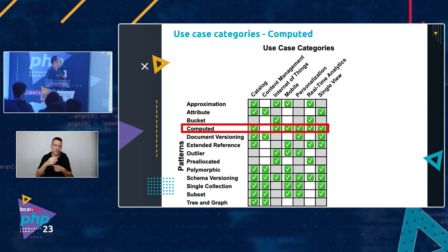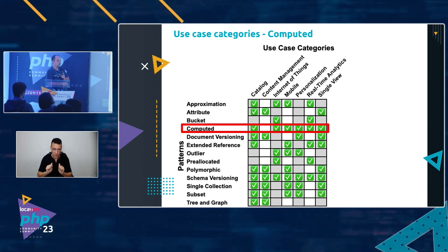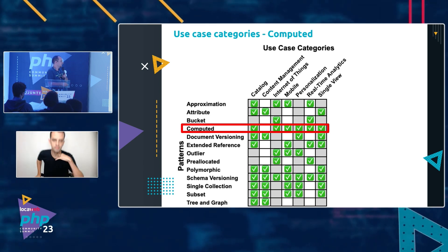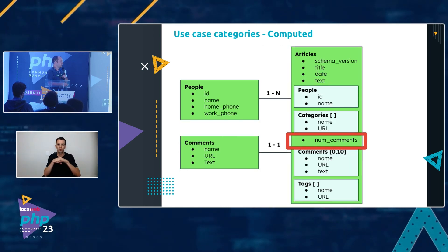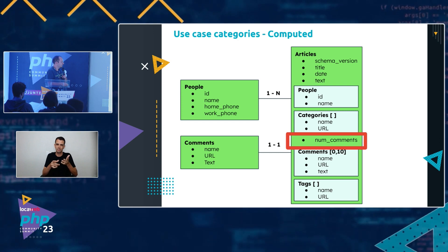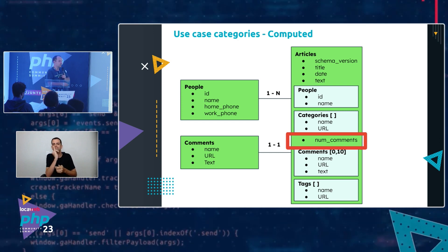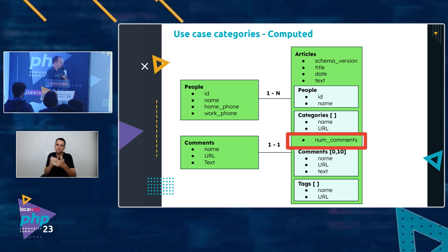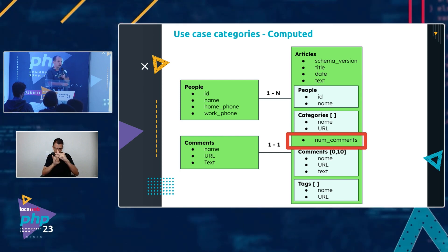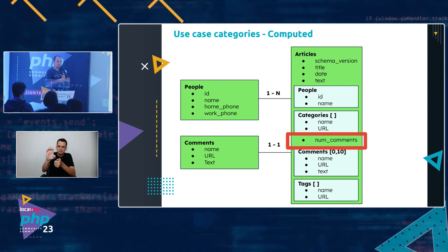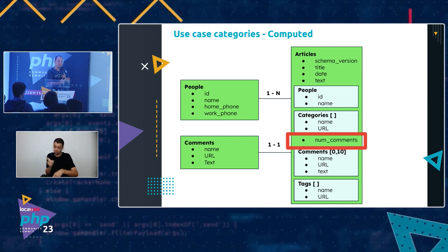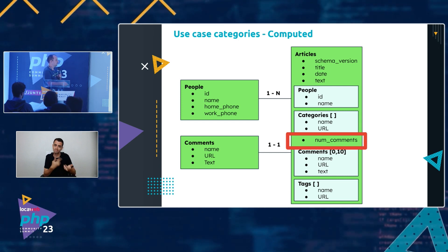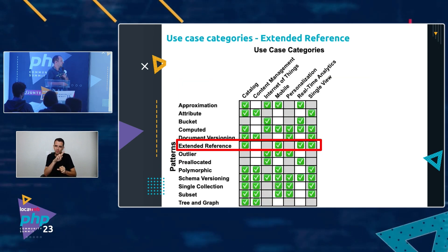The Computed pattern is basically about storing an already-summarized value. For example, the number of comments on an article. When you click on a LinkedIn post and see how many comments or likes there are — do you think they count that in real time? No, that value is already stored. That's a use case for the Computed pattern, and it's very important.